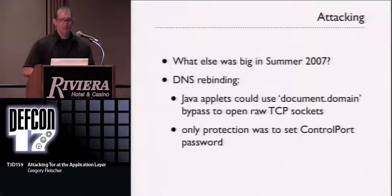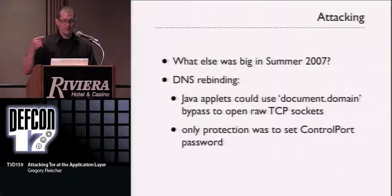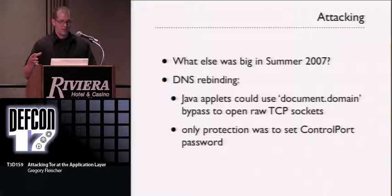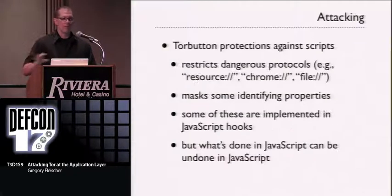There was also a major DNS rebinding issue in summer 2007. Traditional DNS rebinding against Tor didn't work well, but the document.domain bypass could be used with Java to create raw SOCKS connections. At the time, Torbutton didn't block Java, making this extremely effective. The protection was to set a control port password and not allow empty passwords.